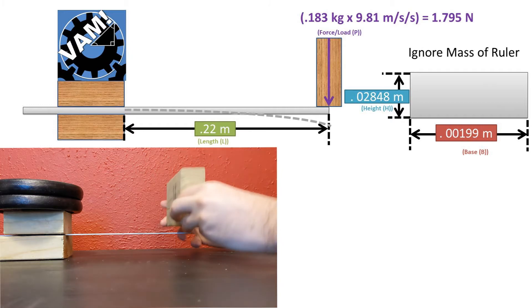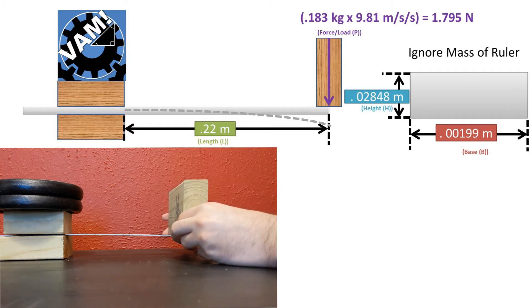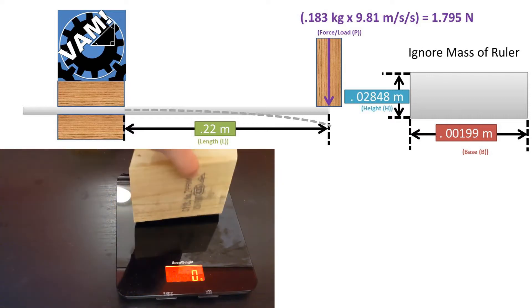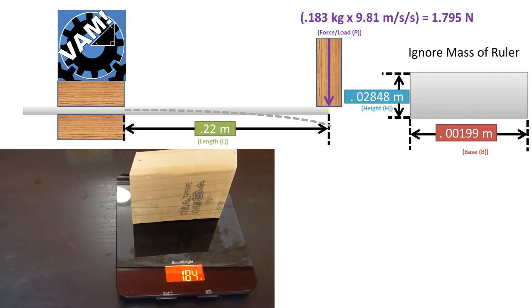We then place a block on the ruler at the very end, teetering so that the force is concentrated at the very end. This block has a mass of 0.183 kilograms, which converts to 1.795 newtons of force.